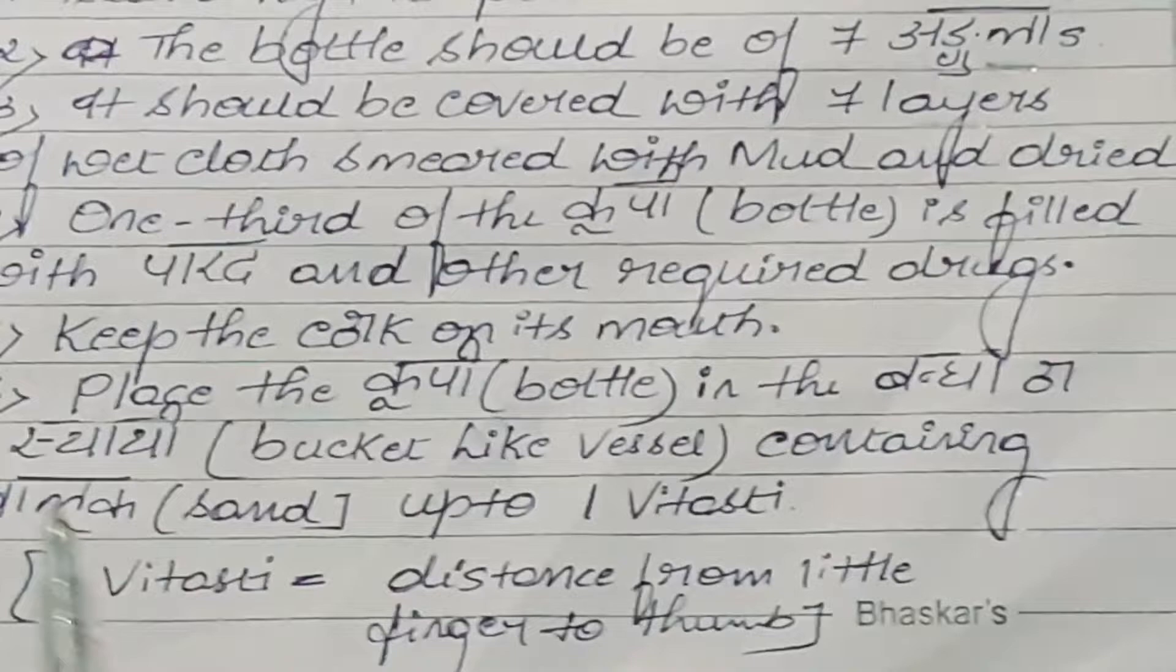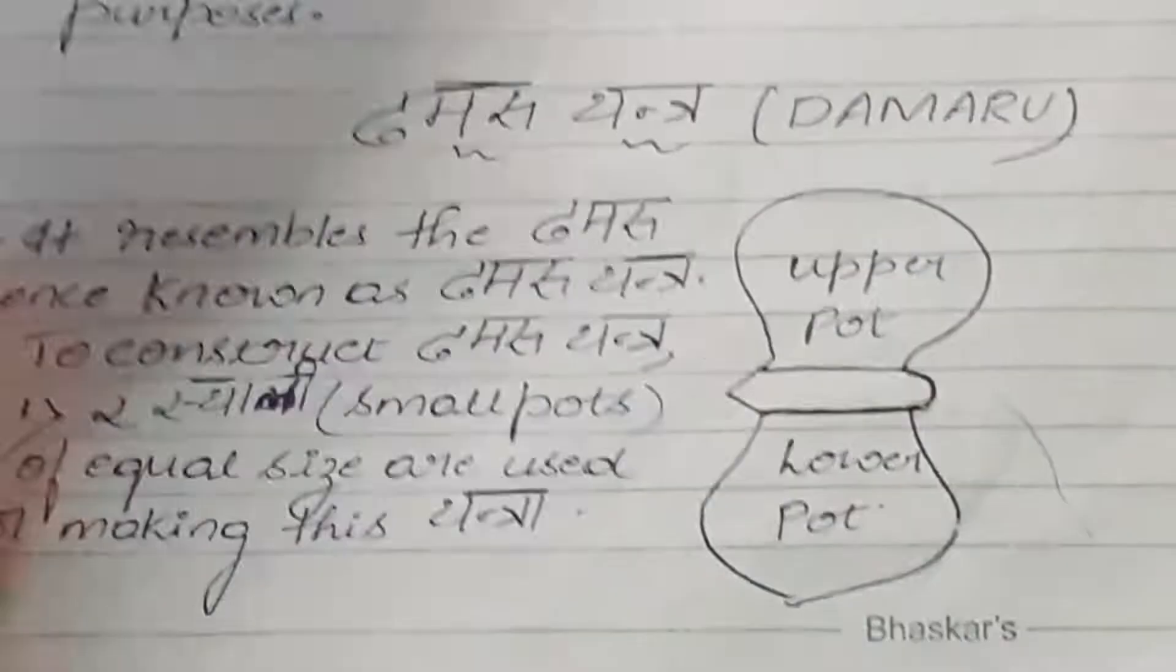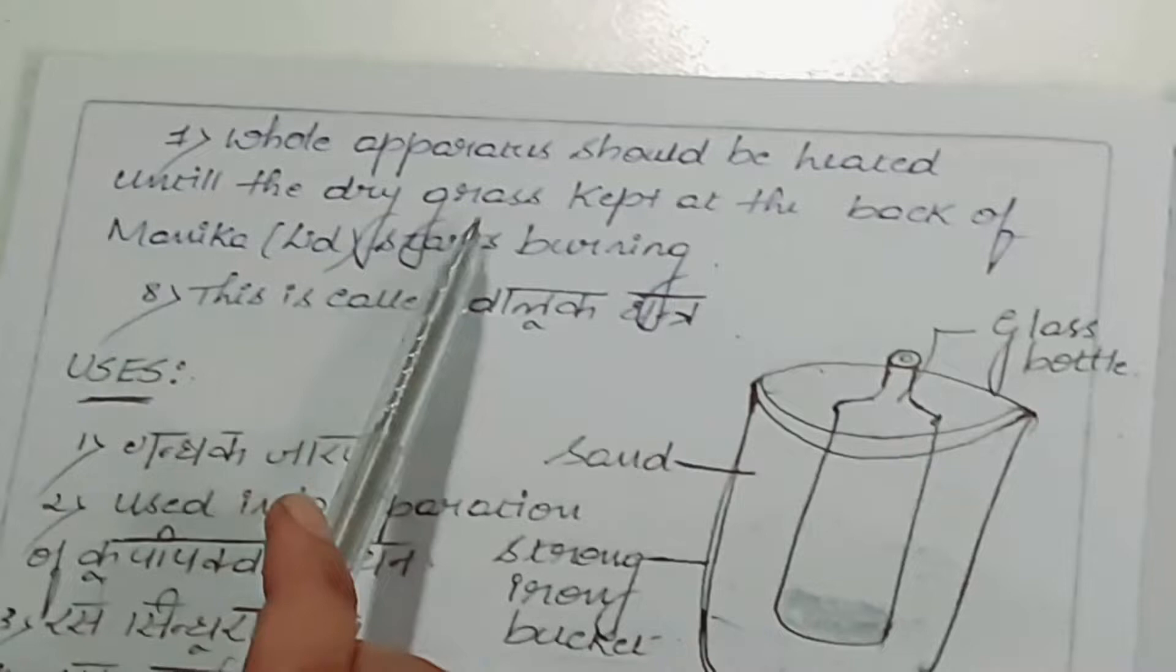One vitasthi means distance from little finger to thumb finger. The whole apparatus should be heated until the dry grass kept at the back of the manika, that is lid, starts burning. This is called Valuka Yantra.